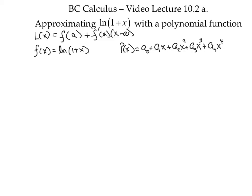So to start off, we note that f of 0 is natural log of 1, which is 0, p of 0 would be just a0. The conclusion a0 must be 0.